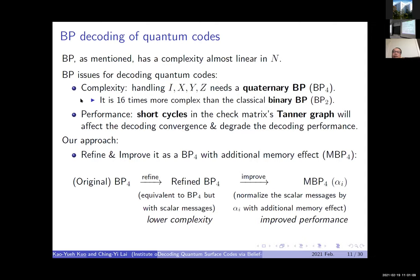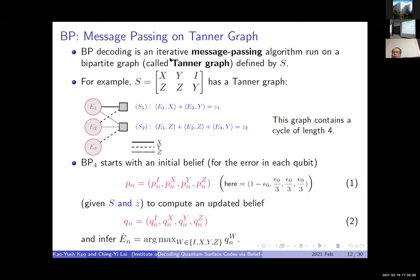BP has complexity almost linear in n. We want to address two issues: first, complexity — BP is about six times more complex than classical BP decoding; second, performance — due to short cycles in the check-matrix Tanner graph. Our approach: we refine classical BP into a refined BP using scalar messages for lower complexity, then improve it with an additional memory effect, calling it MBP, with a tunable parameter alpha_i for improved performance.